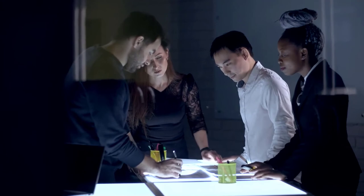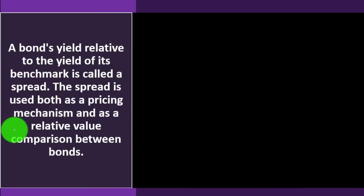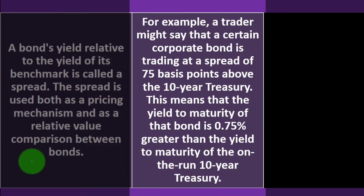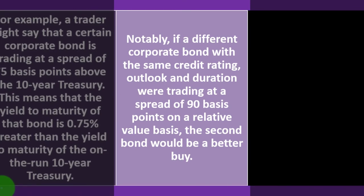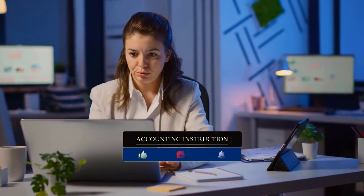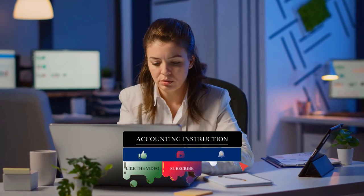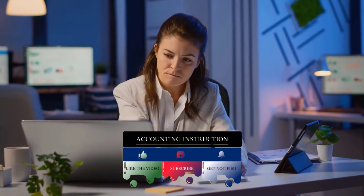A bond's yield relative to the yield of its benchmark is called a spread. The spread is used as a pricing mechanism and as a relative value comparison between bonds. For example, a trader might say that a certain corporate bond is trading at a spread of 75 basis points above the 10-year Treasury — meaning the yield to maturity of the bond is 0.75% greater than the yield to maturity of the on-the-run 10-year Treasury. If a different corporate bond with the same credit rating and duration were trading at a spread of 90 basis points, on a relative value basis, the second bond would be a better buy.